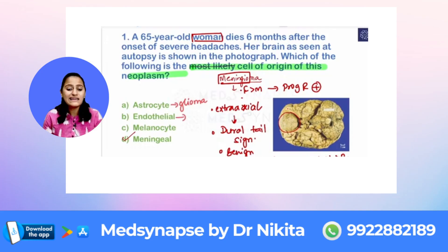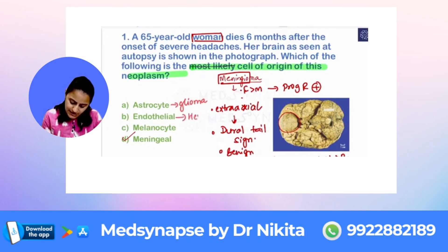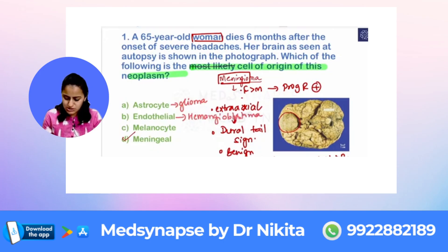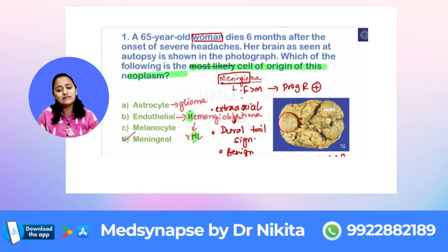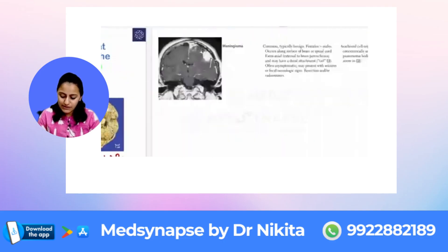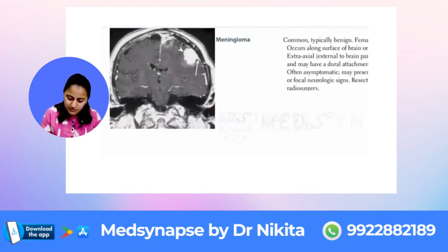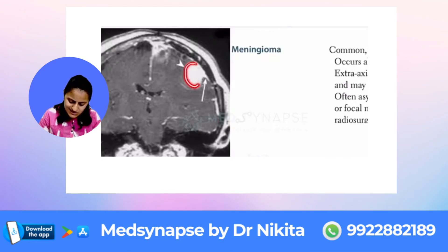A tumor like hemangioblastoma — which is seen in von Hippel-Lindau syndrome — originates from endothelial cells. Remember: hemangioblastoma is associated with von Hippel-Lindau syndrome.